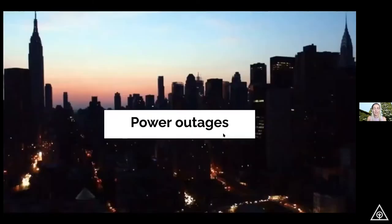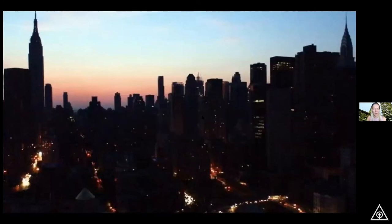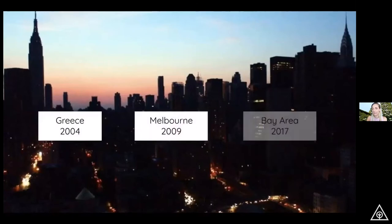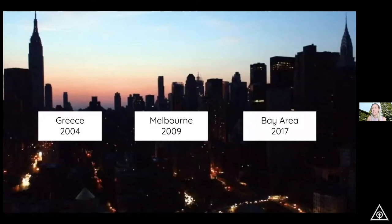When that happens, you get power outages. We just had rolling blackouts through California with recent heatwaves. There was a big one in Greece in 2004, Melbourne 2009, the Bay Area 2017. Just not enough power stations — and we don't want to build more gas power stations. Nobody wants to spend millions of dollars on a polluting gas power station to make up for these peak air conditioning events.